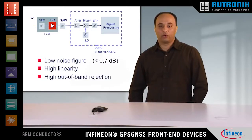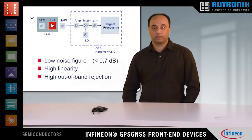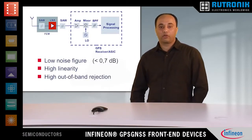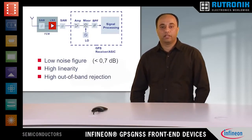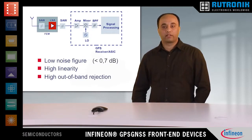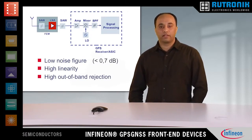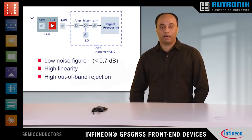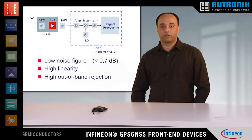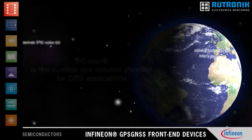High out-of-band rejection is another key requirement. With high out-of-band rejection, the interference caused by the jammer signal in the system is significantly reduced, which in turn leads to fewer tracking errors.